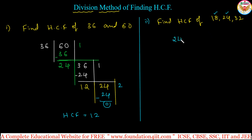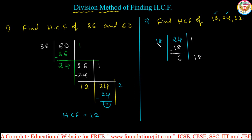Take 24 and divide by the smaller number 18. In the 18 table: 18 once is 18; subtract to get remainder 6. Next, this divisor 18 becomes the new dividend. Continue the same step: in the 6 table, 6 times 3 is 18, remainder 0. So the last divisor is 6, meaning HCF of 18 and 24 is 6.